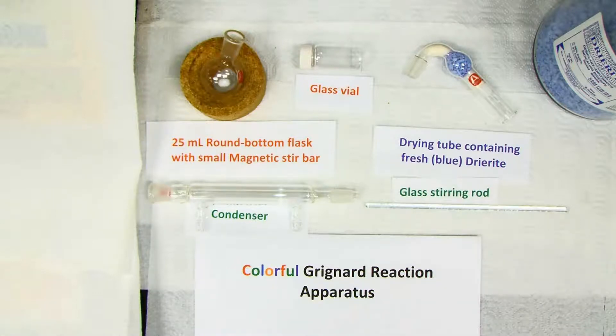Drierite is anhydrous calcium sulfate, a substance that can absorb water. It is blue when free of water, but due to a trace of cobalt chloride indicator, it turns pink when it has absorbed enough moisture to need replacement.